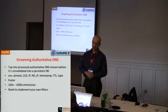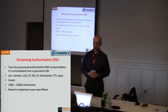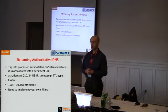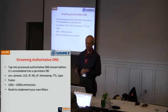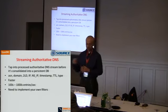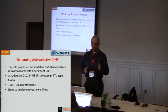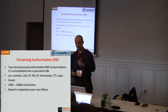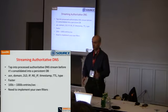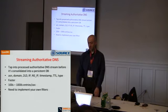In our lab we use streaming authoritative DNS. Recently we introduced the ability to tap directly into the authoritative DNS stream coming from the resolvers. The format after processing includes: ASN, domain, the 2LD, IP, name server, name server IP, timestamp, TTL, and type of response. This was a collaboration between the engineering and research teams. It runs at around a few hundreds to thousands of entries per second, but you'll have to implement your own filters to grab what you want.